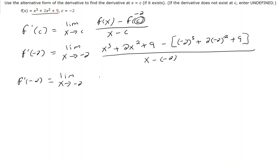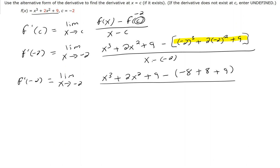I will leave the x to the third plus 2x squared plus 9 just like it is. We want to simplify inside the brackets: negative 2 to the third is negative 8, and 2 times negative 2 squared — well, negative 2 squared is 4, and 4 times 2 is 8 — and then plus 9. We have a negative out in front of the parentheses, so I need to distribute that negative. We know that negative 8 plus 8 cancels out because that's zero.